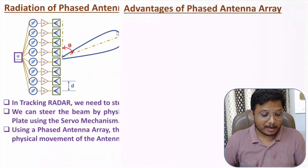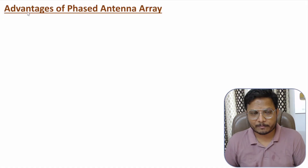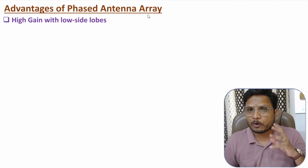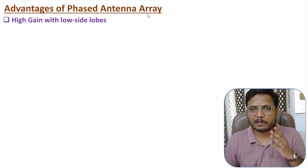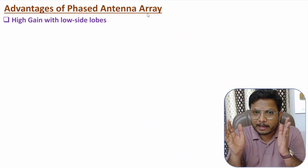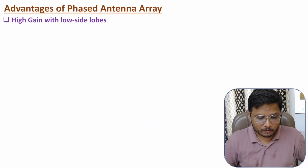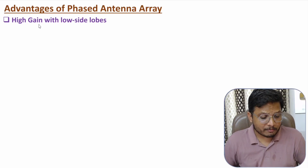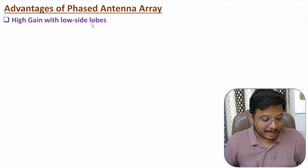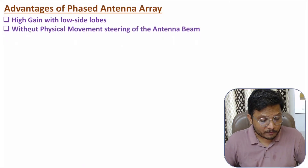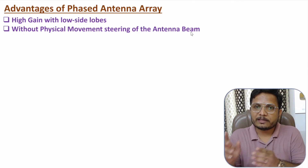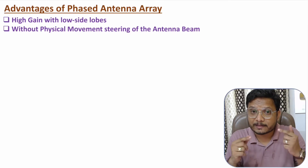Now discussing advantages, disadvantages, and applications of phased antenna array. With an antenna array, we have higher gain and a narrow beam. With the use of antenna array, we have higher gain towards the direction of intended radiation with low side lobes — that is an essential advantage also present in phased antenna array. Without physical movement, one can steer the beam by providing phase shift in the phase shifter.